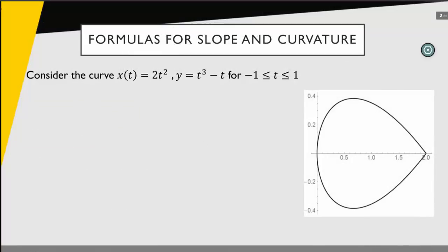Consider the curve x equals 2t squared and y equals t cubed minus t for t between negative 1 and 1. So we have the curve described parametrically. What I want to do is calculate the slope at different points along my curve. The slope is going to be dy/dx. I have my y and x both as functions of t, so I need to get an expression for this just in terms of t.